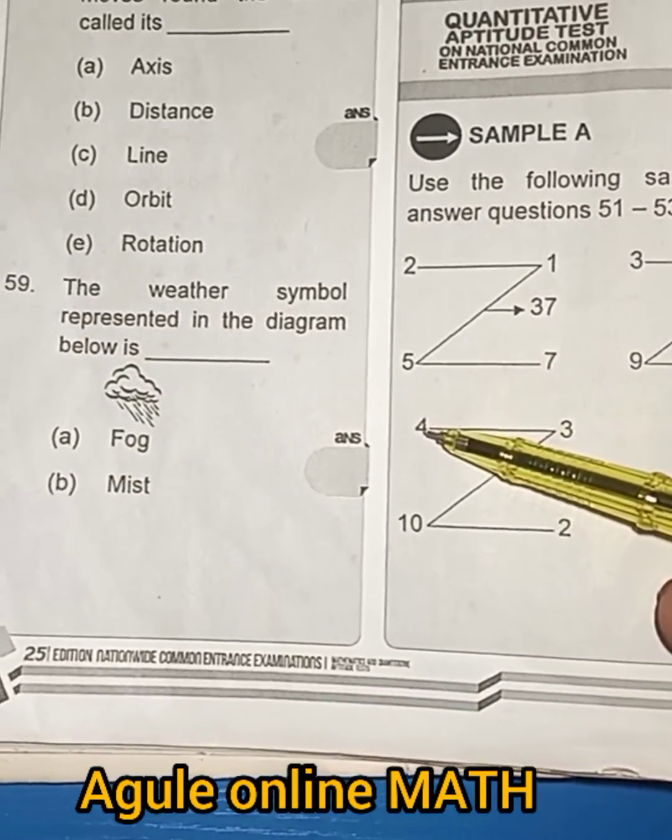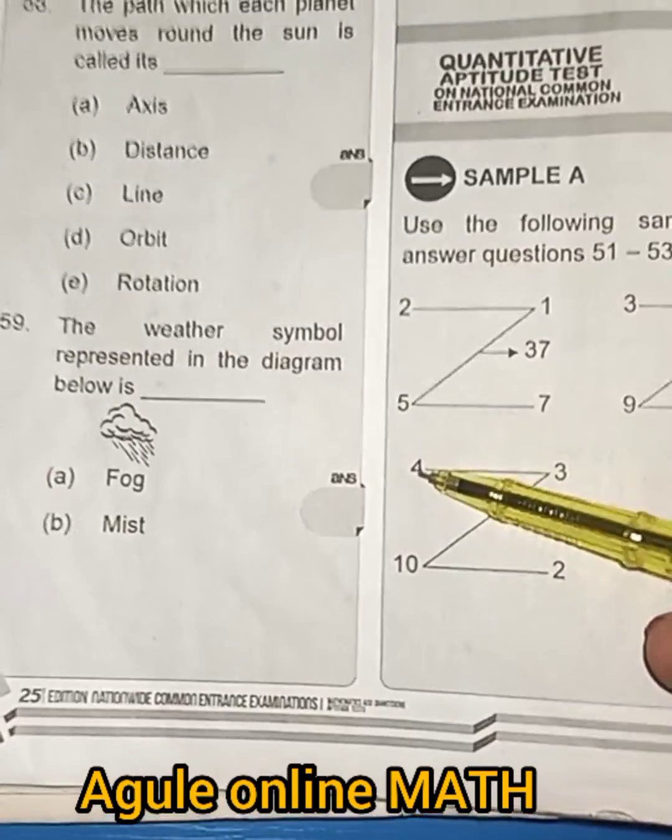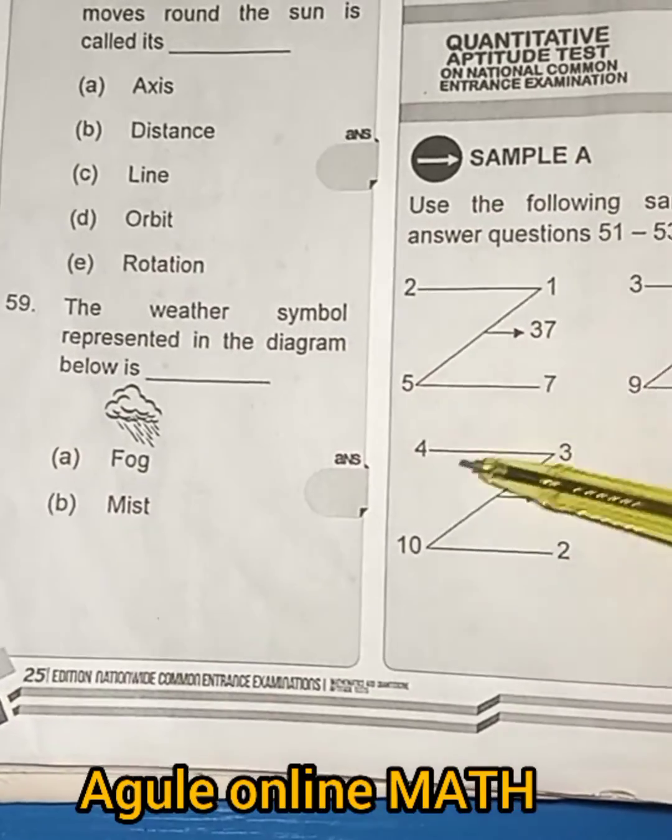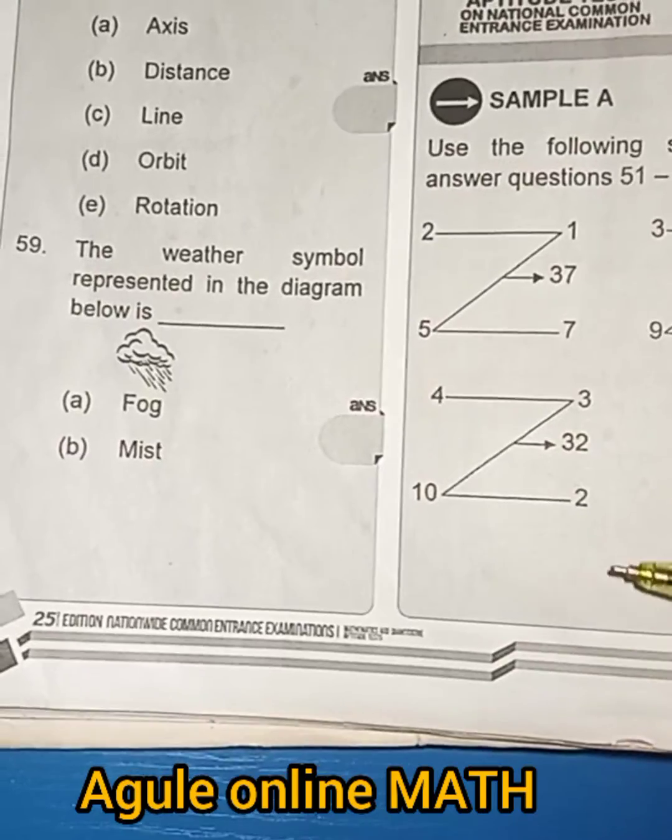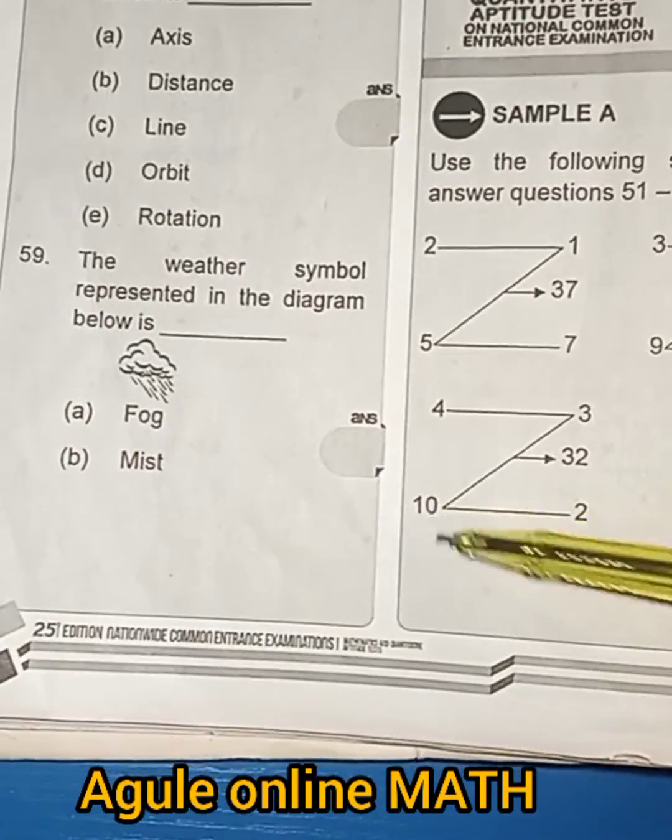You do 32 minus 4 times 3, that is 32 minus 12. You're left with 20. 20 divided by 10 here will give you 2, or that 20 divided by 2 will give you 10.